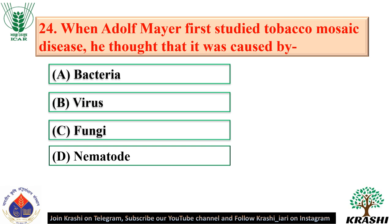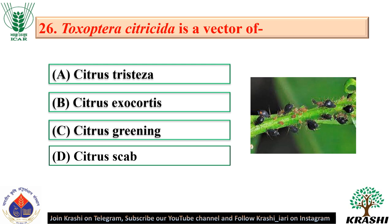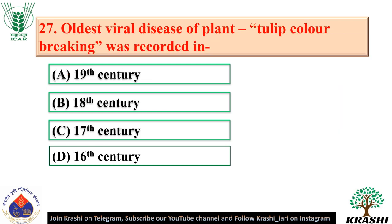Question number 24: When Adolf Mayer first studied tobacco mosaic disease, he thought it was caused by bacteria — option A. Question number 25: Viroid consists of circular naked RNA. Question number 26: Toxoptera citricida is a vector of citrus tristeza. Question number 27: The oldest viral disease of plant, tulip color breaking, was recorded in the 16th century.